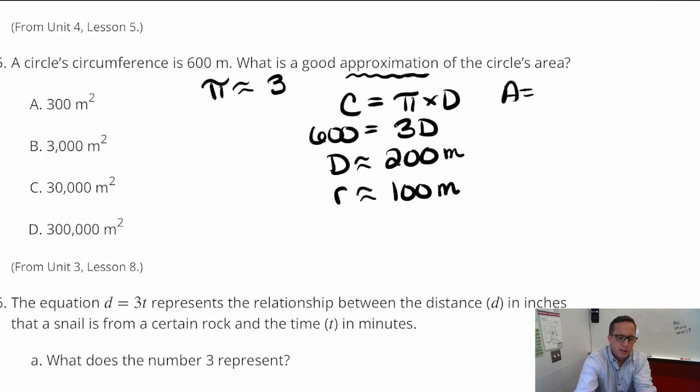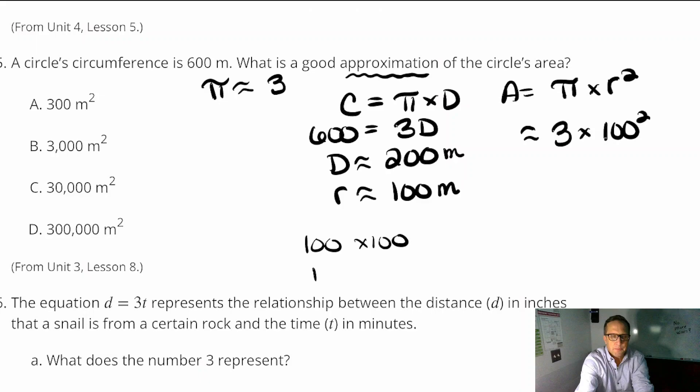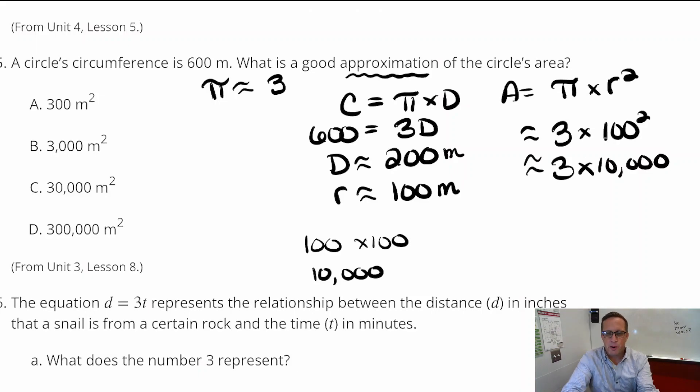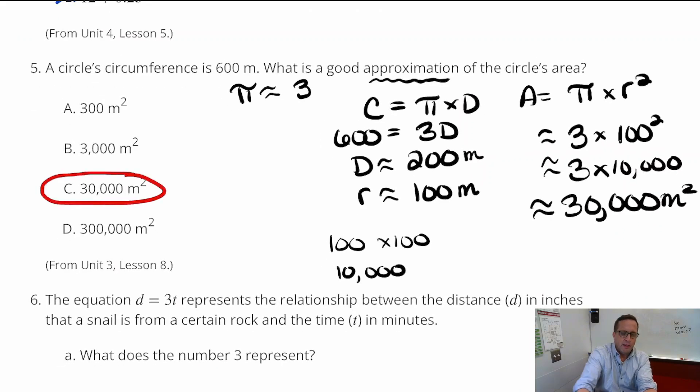And then, area, area of the circle, is pi times radius squared. Pi times radius squared. And again, we're using 3 for pi here. So, we're going to do 3 times 100 squared. Now, 100 squared is 100 times 100. If you want to, that's going to have 4 zeros. Now, what has 4 zeros? It is going to be 10,000. So, you're going to do 3 times 10,000. And, that is going to be 30,000 square meters. And, that's one of those choices right there. We got it.